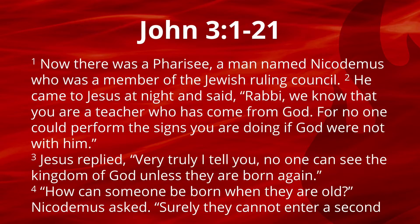Our Bible story today is the Gospel of John — we're in John chapter 3, verses 1 through 21. It says: 'Now there was a Pharisee, a man named Nicodemus, who was a member of the Jewish ruling council. He came to Jesus at night and said, "Rabbi, we know that you are a teacher who has come from God, for no one could perform the signs you are doing if God were not with him." Jesus replied, "Very truly I tell you, no one can see the kingdom of God unless they are born again."'